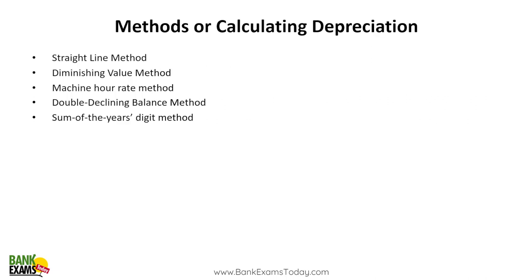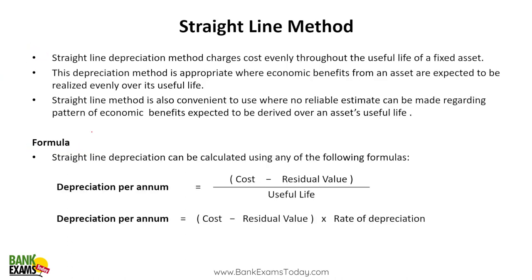Now the methods — these are important: Straight Line Method, Diminishing Value Method, Machine Rate Method, Double Declining Method, and Sum of Years Digits Method. All five methods are important.